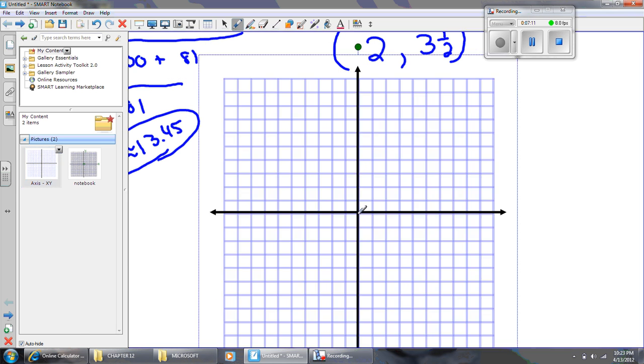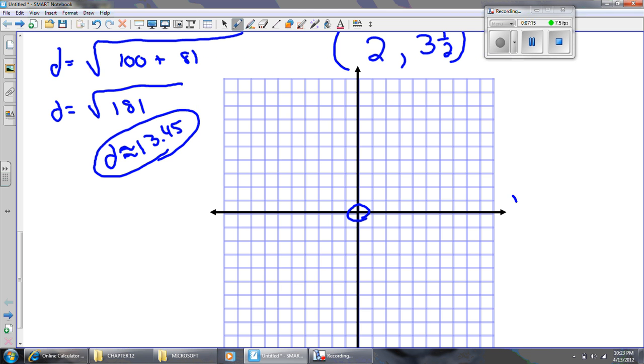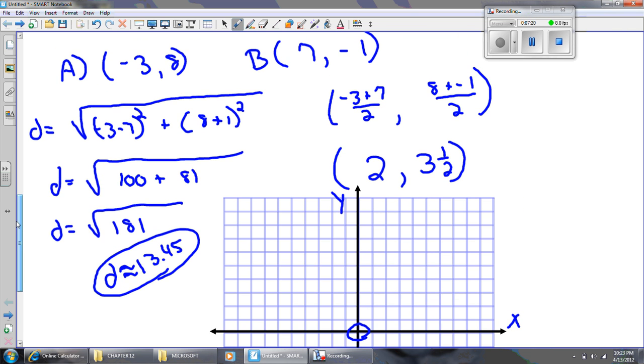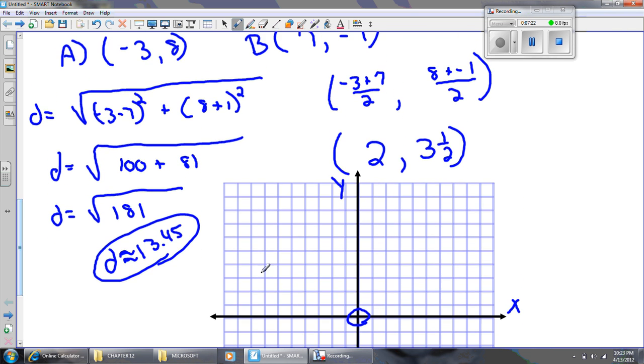Bring it on over. Put my origin in. Put the x-axis and the y-axis labeled. Point A's coordinates is at negative 3, 8. So that's point A.